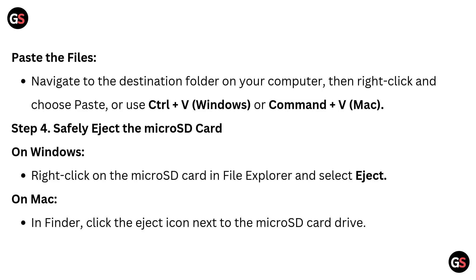Paste the files by navigating to the destination folder on your computer, then right-click and choose Paste, or use Ctrl+V on Windows or Command+V on Mac. Step 4: Safely eject the microSD card. On Windows, right-click the microSD card in File Explorer and select Eject. On Mac, in Finder, click the Eject icon next to the microSD card drive.